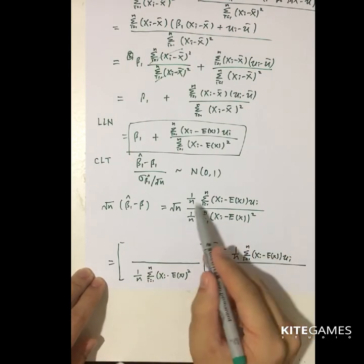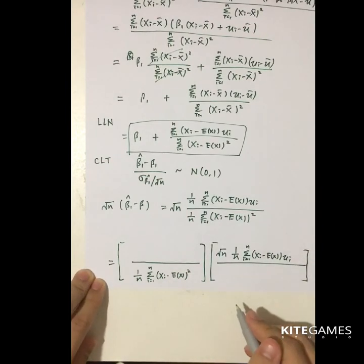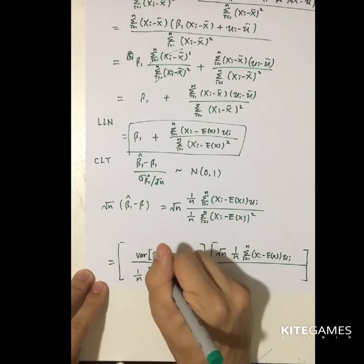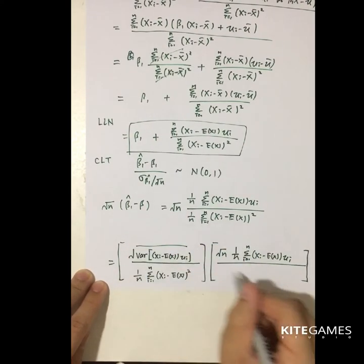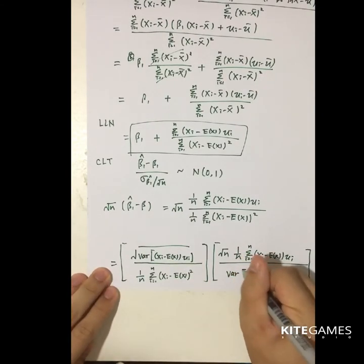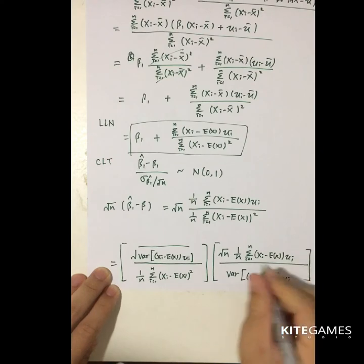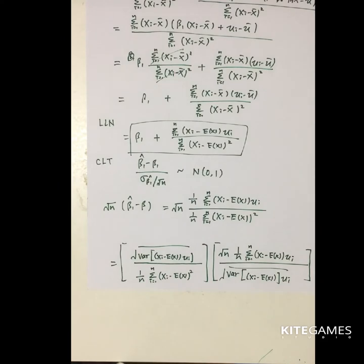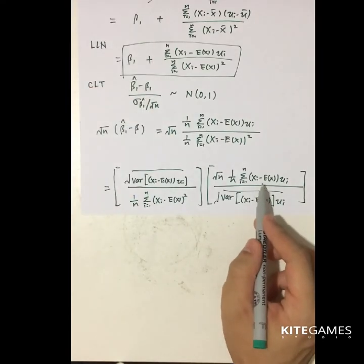I separate the fraction — numerator to the numerator, denominator to the denominator — and in between I add the variance of (x_i minus E[x])·u_i and take the square root. This is the standard deviation. Then I put the variance of (x_i minus E[x])·u_i here; I multiply by this term and divide by this term, keeping the expression constant.